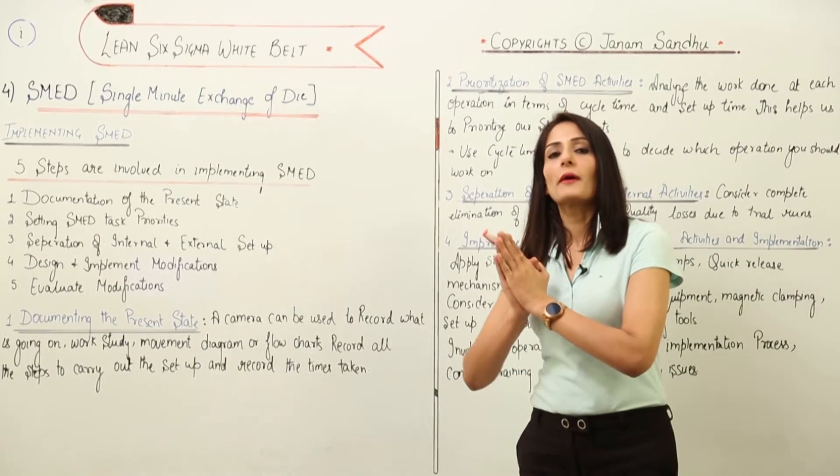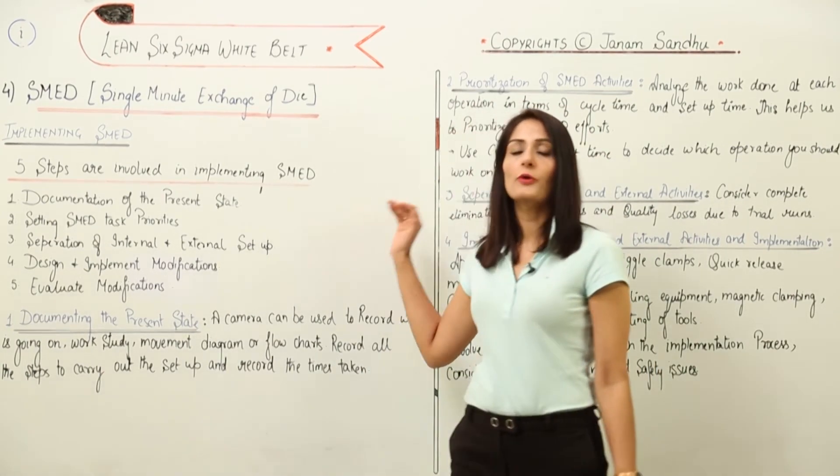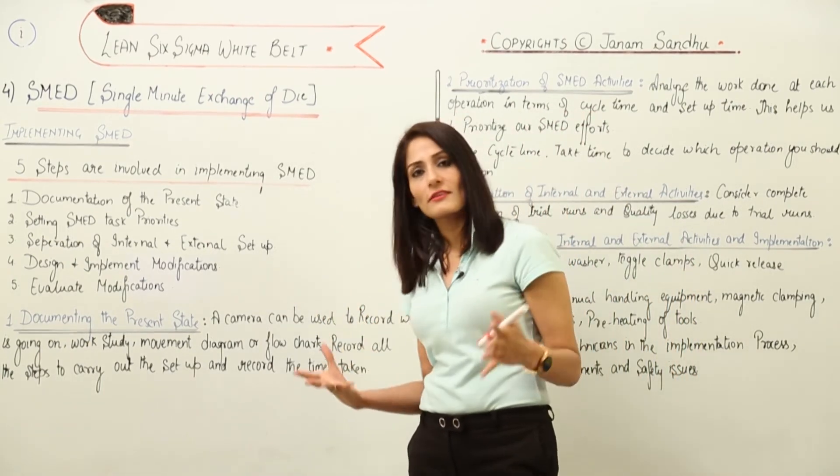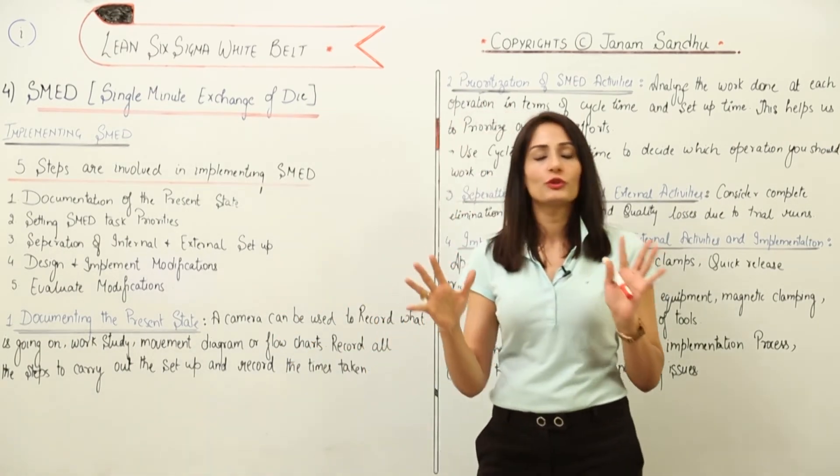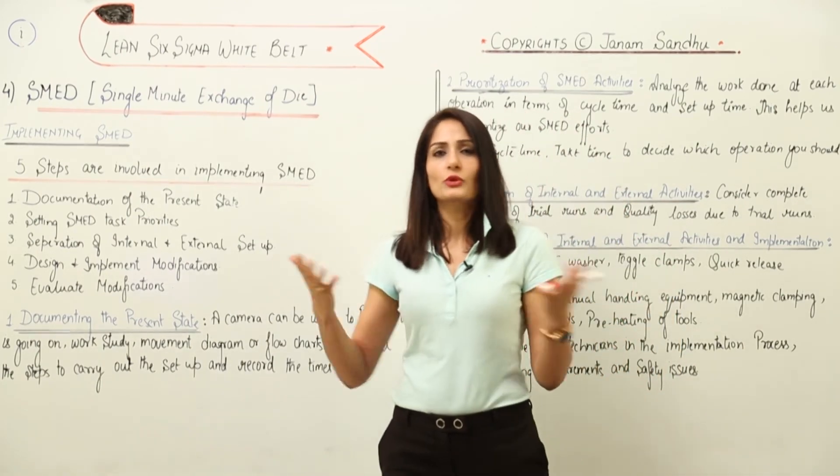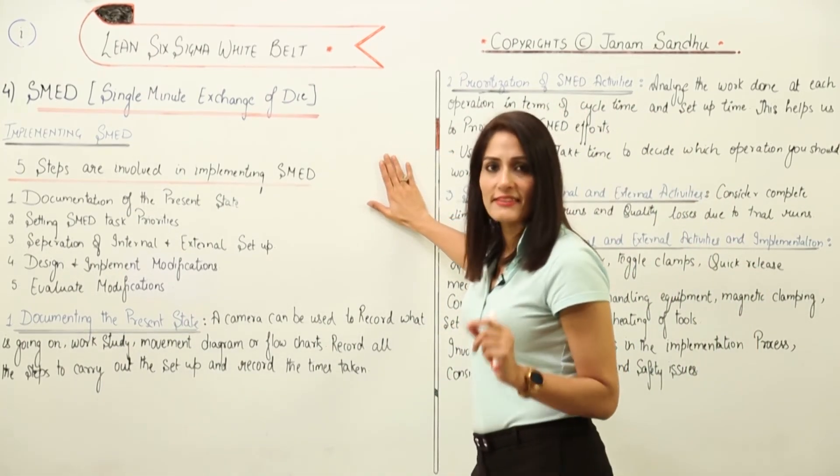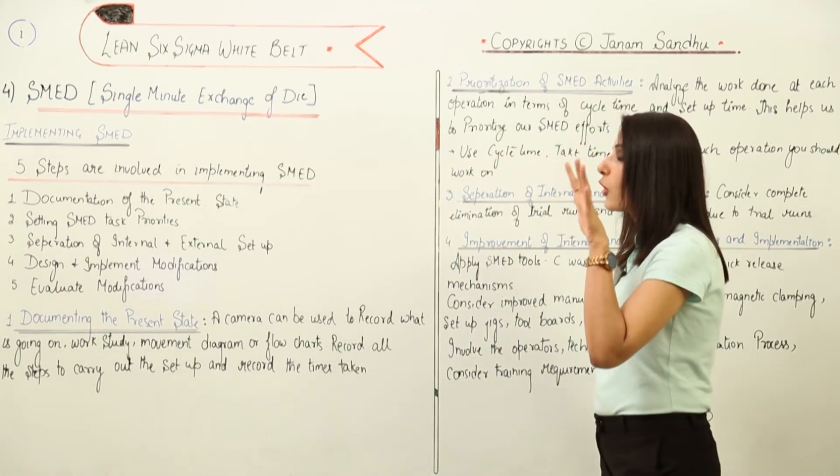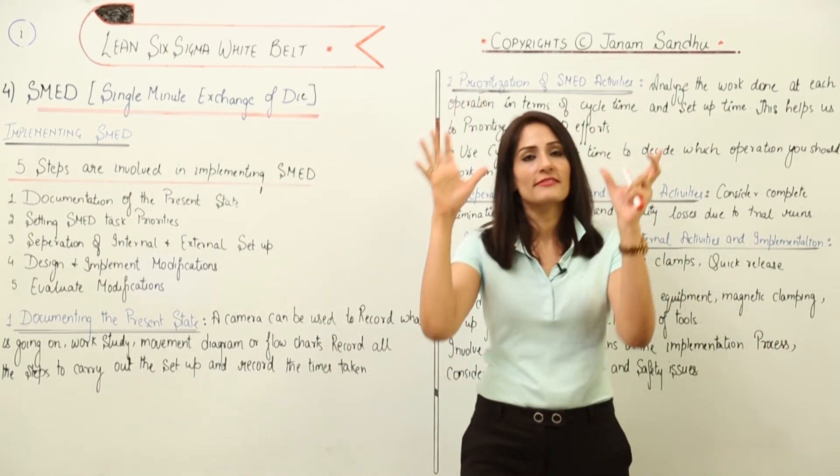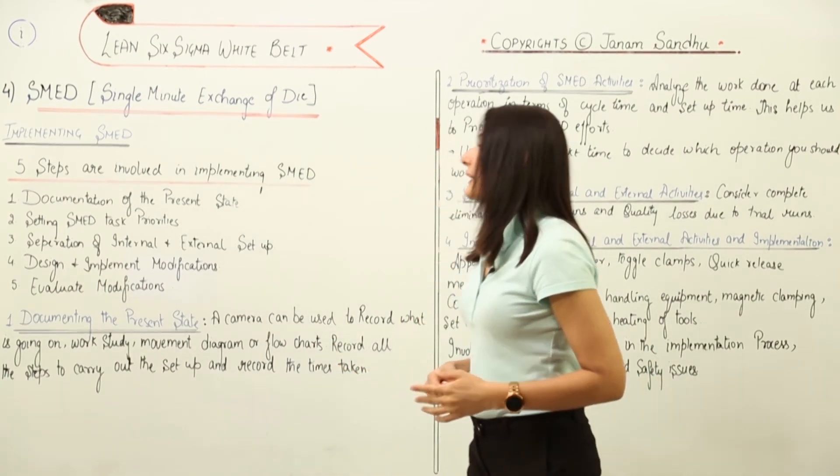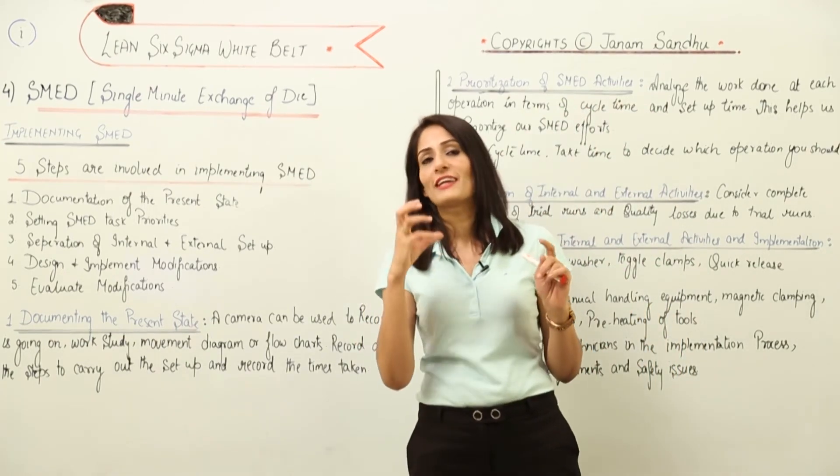Now if changeover time is something that is bothering you, I think you should understand how to implement SMED, because this is one such tool, one such method, one such concept that can help you handle changeover time efficiently and effectively. There are ideally five steps involved in implementing SMED. The first one is documentation of the present state. Whenever we try to improve anything, the first thing is to understand what is the current situation. Then, setting SMED task priorities - what are the areas, what are the operations that you should fix first so that the maximum chunk of time can be reduced from the setup time.